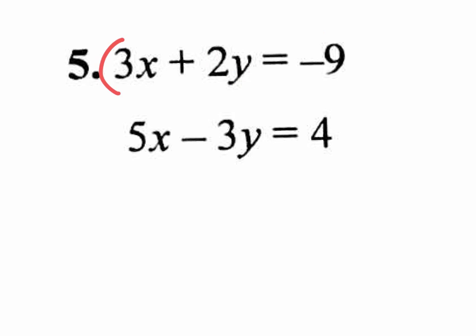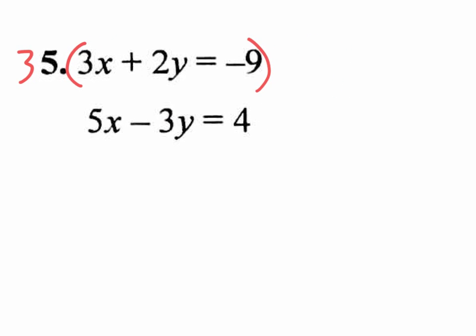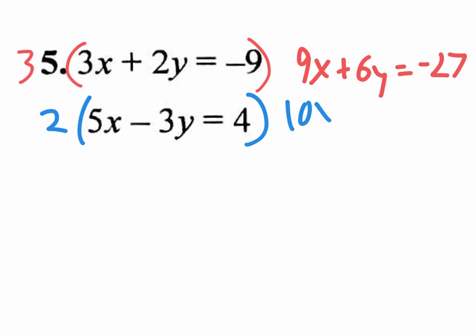I'm going to multiply by 3. Because I want it, like I said, I want this to become a 6Y. I want this to become a 6Y because this is already a negative, I'll make this a negative 6Y. So I'm going to distribute the 3 and get a new equation up top and that'll be 9X plus 6Y equals negative 27. And the bottom equation, I'm going to multiply everything by 2. That way I'll get a negative 6Y in the middle. So 2 times 5X is 10X. 2 times negative 3Y is negative 6Y. And 2 times 4 is 8.